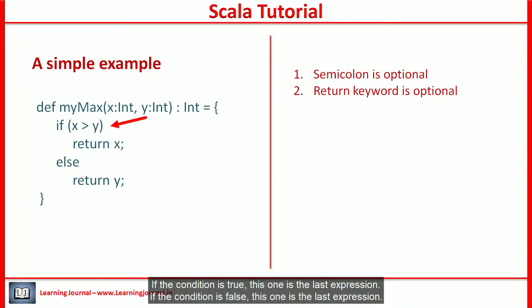Now the next question. A function always returns the value of the last executed expression. If the condition is true, this one is the last expression. If the condition is false, this one is the last expression. Right? Let's eliminate semicolon and return.